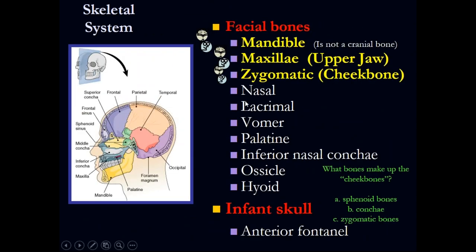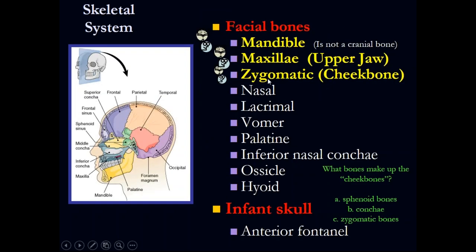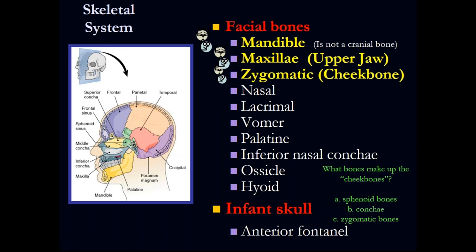We have eight bones in the cranium: frontal, parietal, temporal, ethmoid, sphenoid, and occipital — one occipital. We have 14 facial bones. Get familiar with the mandible — the jaw — which is one bone. The maxilla is the upper jaw and comes as a pair. The zygomatic is the cheekbone.